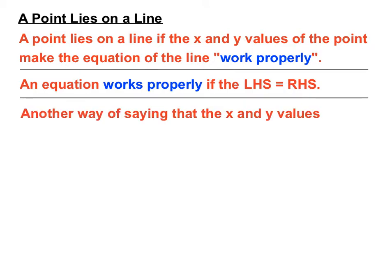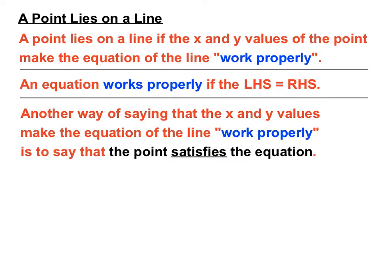Now, another way of saying this, you get questions that say another way of saying is that the x and the y values make the equation of the line work properly. Well, another way is to say that the point satisfies the equation. It's a strange way of putting it. But if a point lies on a line, the x and y values are said to satisfy the equation.